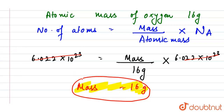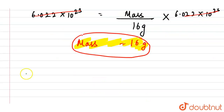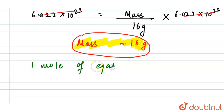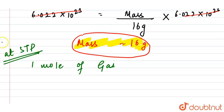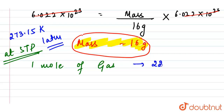It is also given that 11.2 liters at STP are removed. We know that one mole of gas occupies 22.4 liters at STP, which is standard temperature and pressure: 273.15 K and 1 atmosphere.